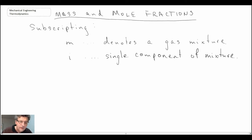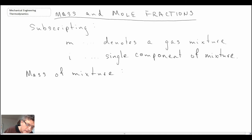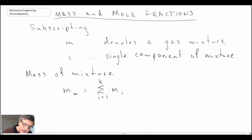Let's start with the simplest and take a look at the mass of a mixture. This one is somewhat obvious — the mass of a mixture is equal to the summation of the mass of each individual component in that mixture. You add up the individual masses and that gives you the mass of the mixture.